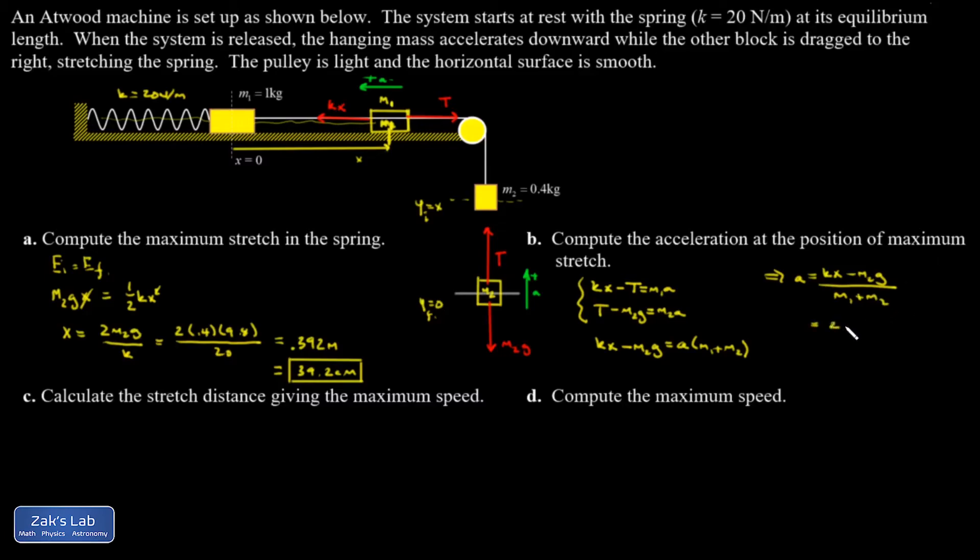And that means a is kx minus m2g divided by m1 plus m2. So plugging things in, I have 20 for k. My stretch length at this point, I just solved for in part a. That's 39.2 centimeters or 0.392 meters. m2 is 0.4, g is 9.8. That's all divided by m1 plus m2, which is 1.4 kilograms total. And when I run the numbers on this, I get 2.8 meters per second squared.